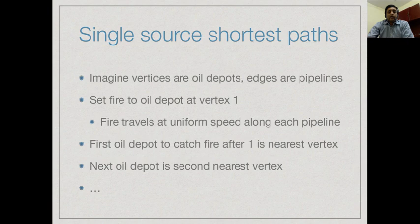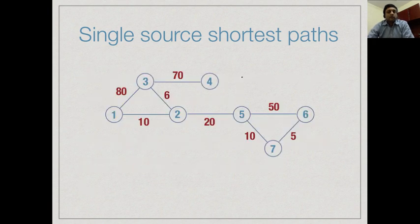Here is an analogy to help explain the algorithm. Assume every vertex is an oil depot, all edges are pipelines, and the edge costs are the lengths of the pipelines. When we set fire to the start vertex, fire catches on all pipes connected to it. Assuming fire travels at a uniform speed, it will reach the closest vertex first, then the second nearest, and so on. By measuring the time at which fire reaches each vertex, we compute the shortest path.